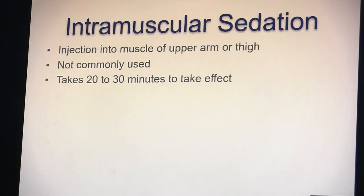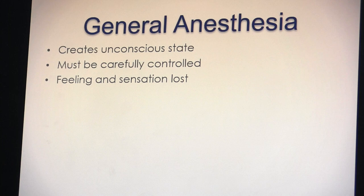Intramuscular sedation is an injection directly into the muscle of the upper arm or thigh. It is not commonly used but may be seen in pediatric practices, and takes about 20 to 30 minutes for the anesthetic to take effect. General anesthesia provides a deep level of sedation creating an unconscious state. The patient's vital signs must be closely monitored and they will be on a ventilator for the duration. General anesthesia alters and depresses the central nervous system, and the patient loses all feeling and sensation.